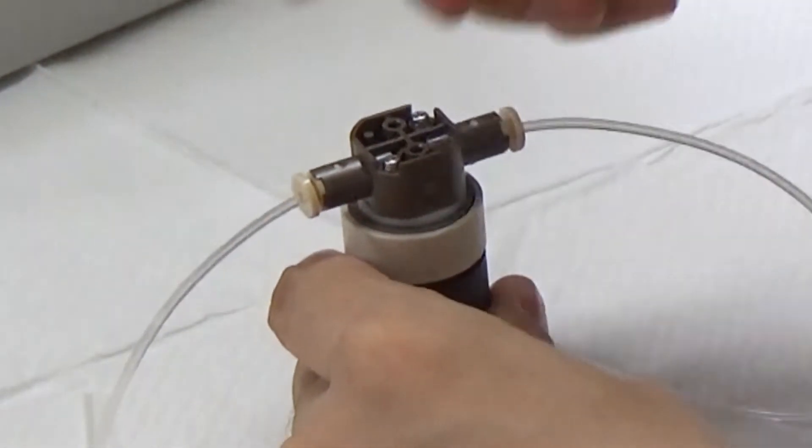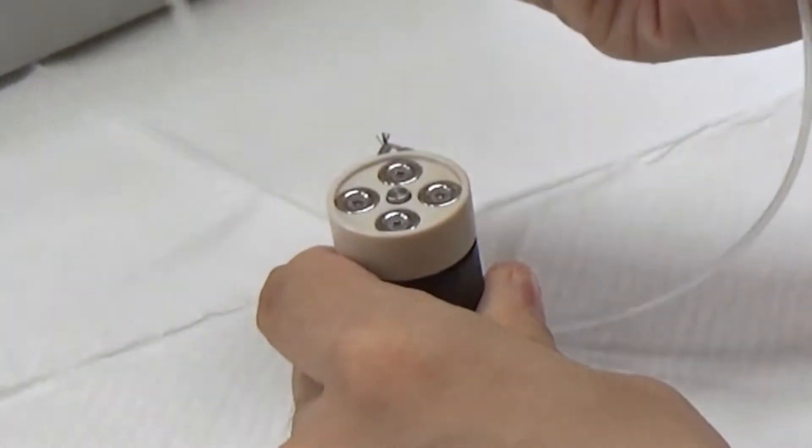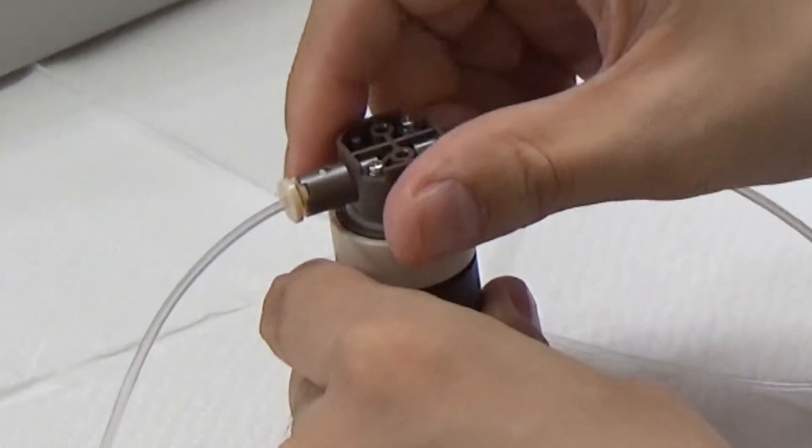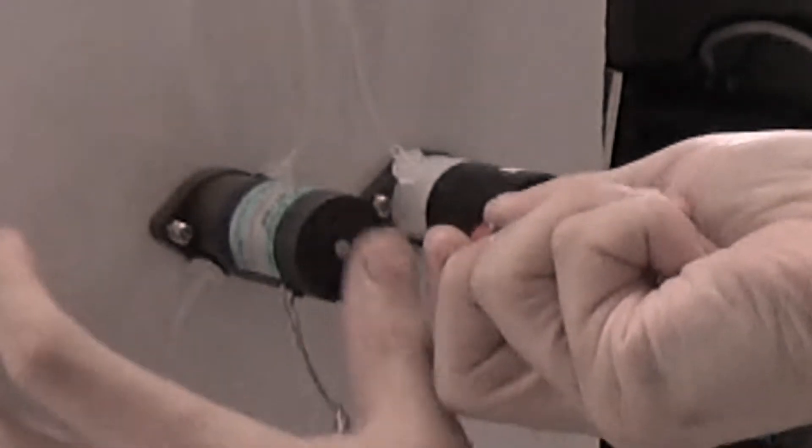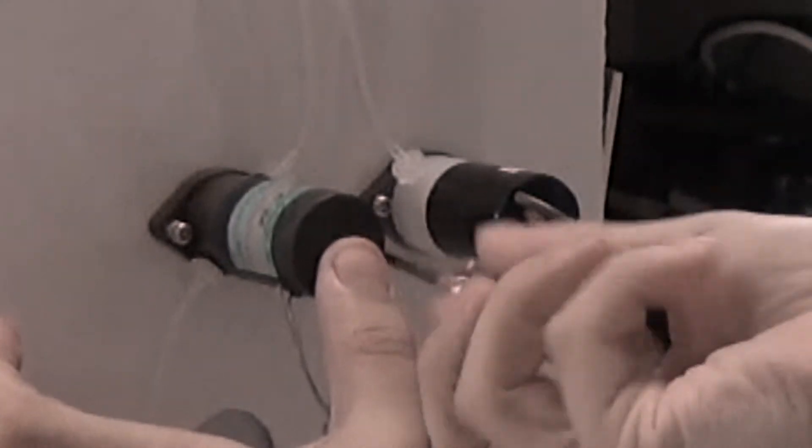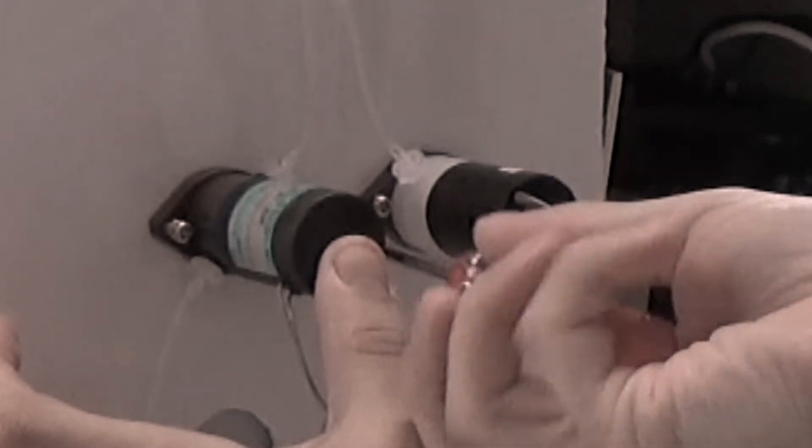Have you ever wanted to replace the wetted materials for each test or experiment? Typical valves have the wetted parts and the actuator integrated, and the only way to replace the wetted part was to replace the entire valve.